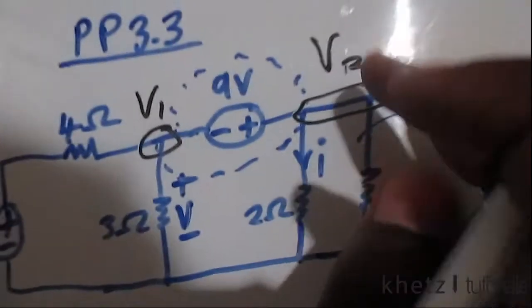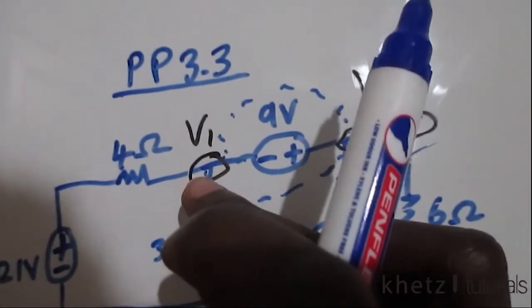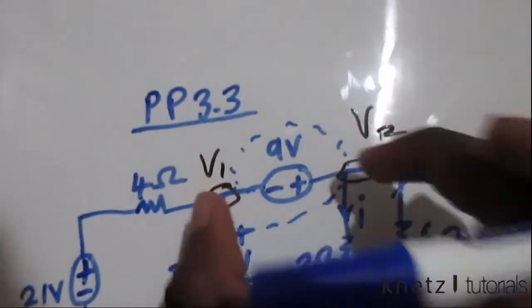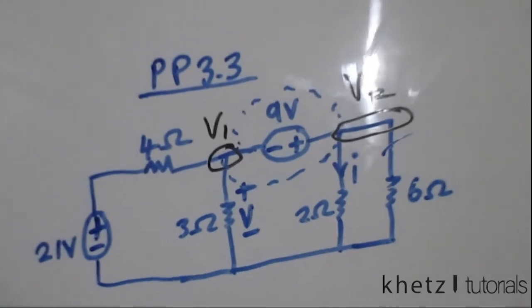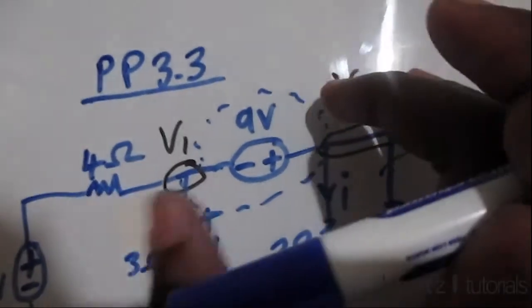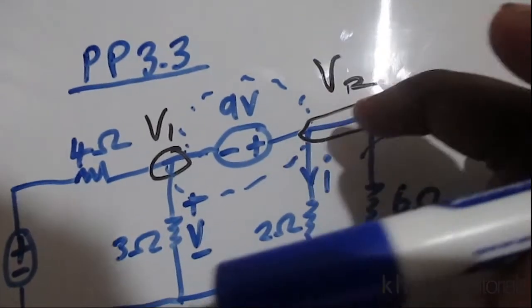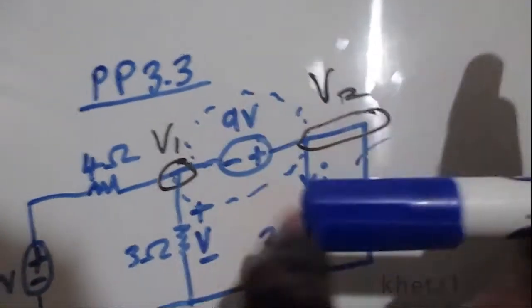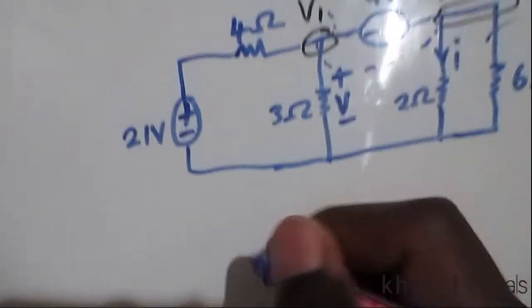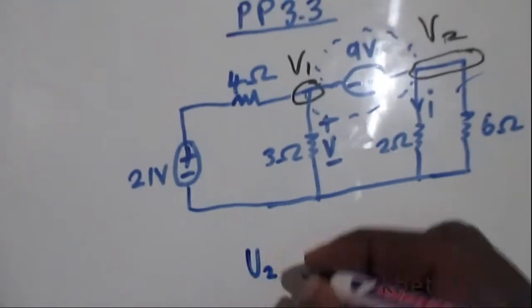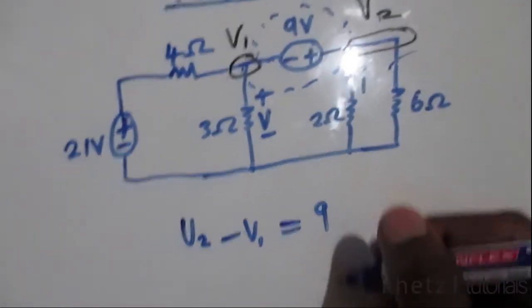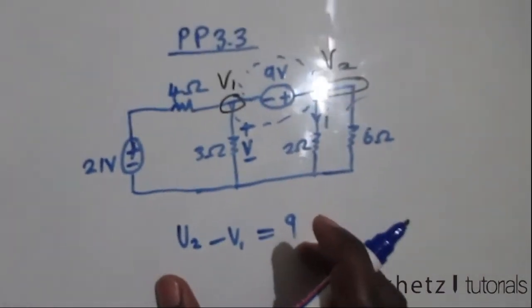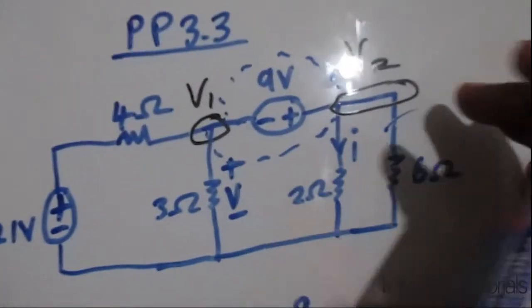V2 minus v1 will give you 9 volts, which is the voltage between these two. That is basically the definition of potential difference or voltage, the voltage between two points. Between v2 and v1 we have 9 volts, so let's write that: v2 minus v1 equals 9. This is going to help us solve the problem. Now let's form the equation of our super node.